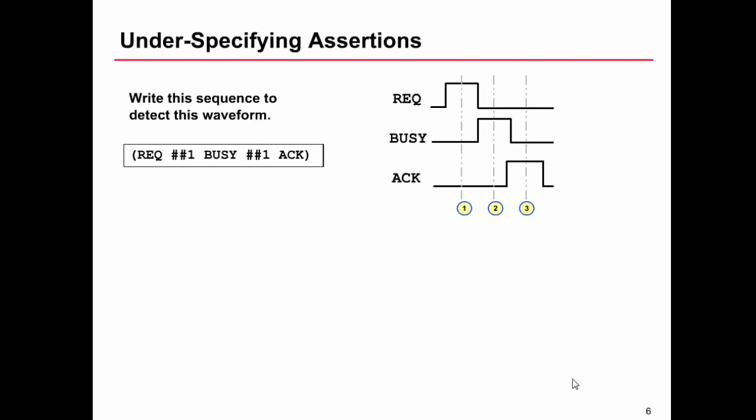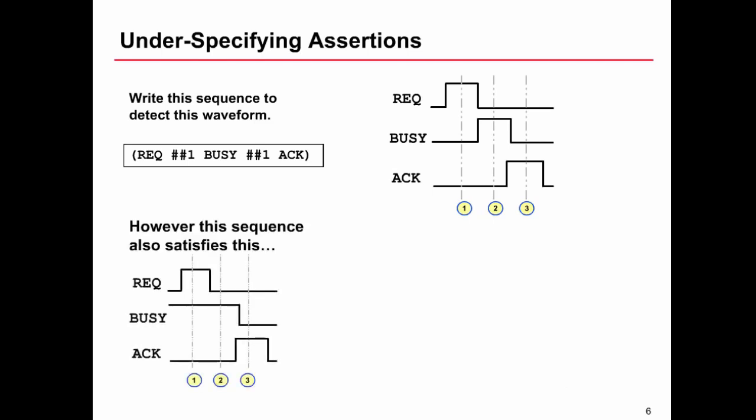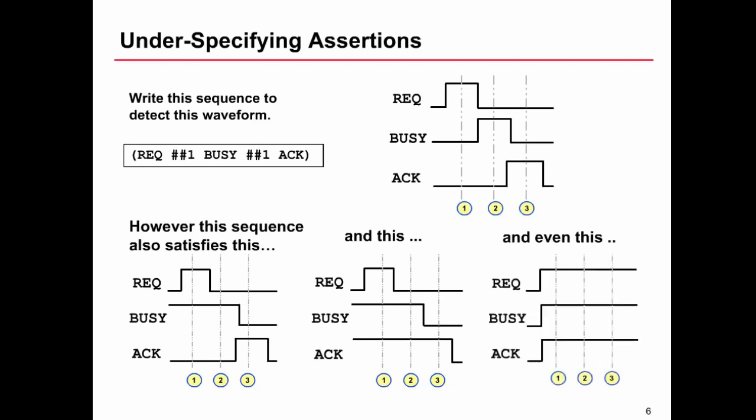the behavior described by that sequence can be satisfied in more than just the way we saw initially. So this sequence would also satisfy that. So notice on the cycle one where rec occurs, we're saying nothing at all about what busy and ac are doing. And this is another way in which we could meet the behavior required by that sequence. So notice on the cycle we're checking for busy, we're not saying anything about what rec or ac are doing. And here's another example here. If rec, busy, and ac were all stuck at logic one, the behavior required by that sequence is always met all of the time.